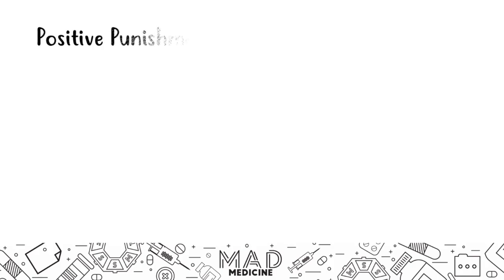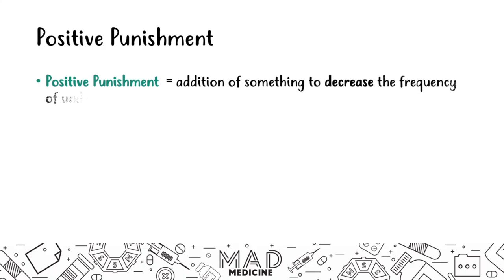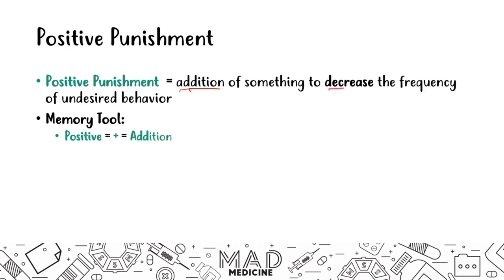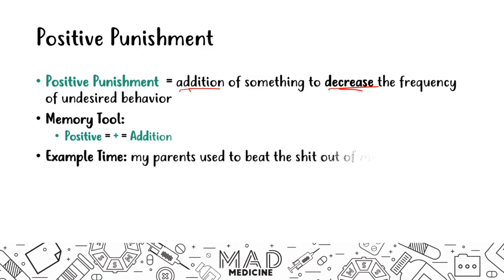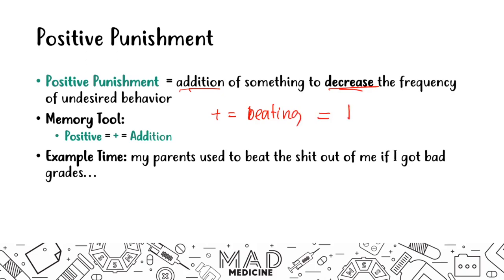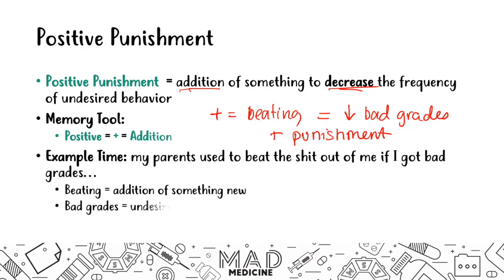Let's talk about positive punishment. Positive punishment is the addition of something to decrease the frequency of the undesired behavior. The example here is that a parent might use a physical punishment to reduce the amount of bad grades a child gets. So the addition of a beating would equal a decreased frequency of bad grades — that's positive punishment, where a beating was the addition of something new and bad grades were the undesired behavior.